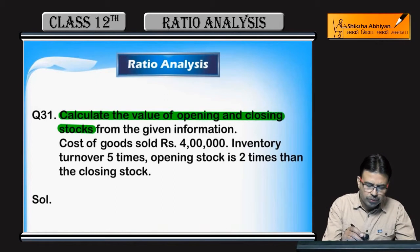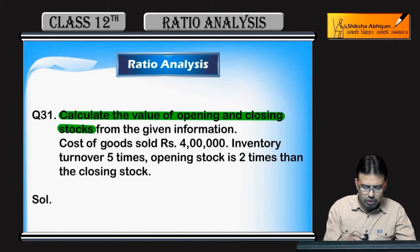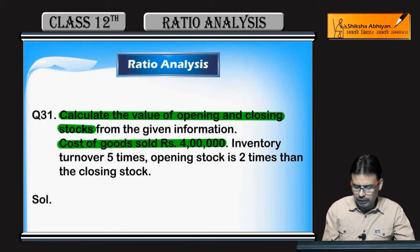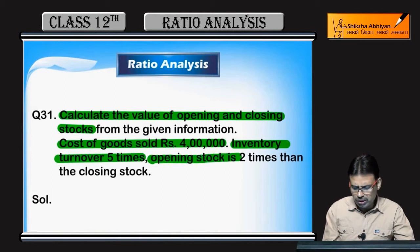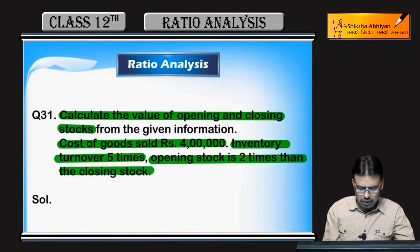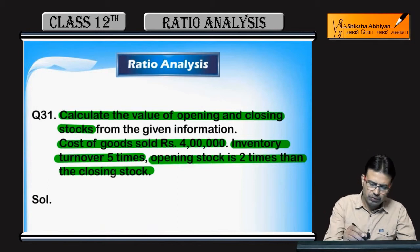Next question: calculate opening stock, closing stock, and cost of goods sold. Given: inventory turnover ratio is five times, COGS is four lakh, and opening stock is two times the closing stock.